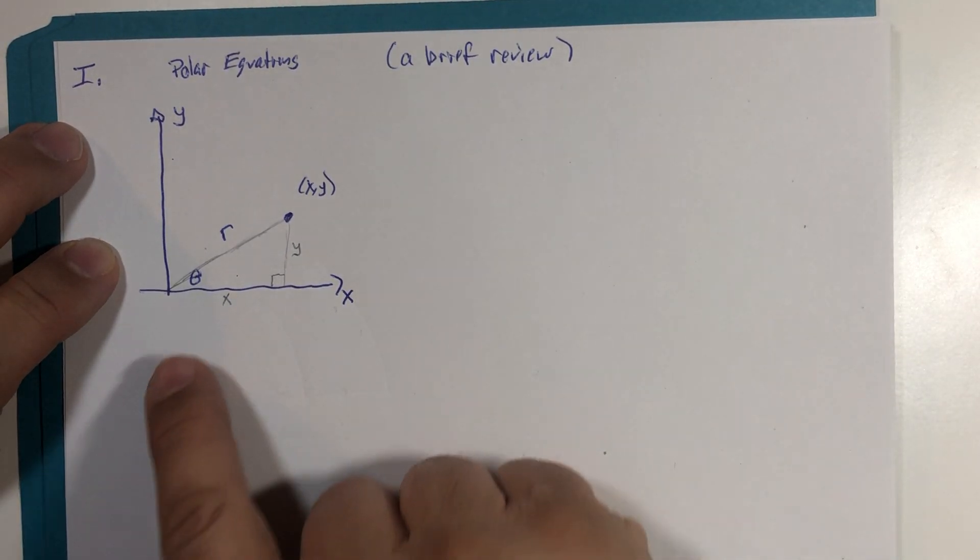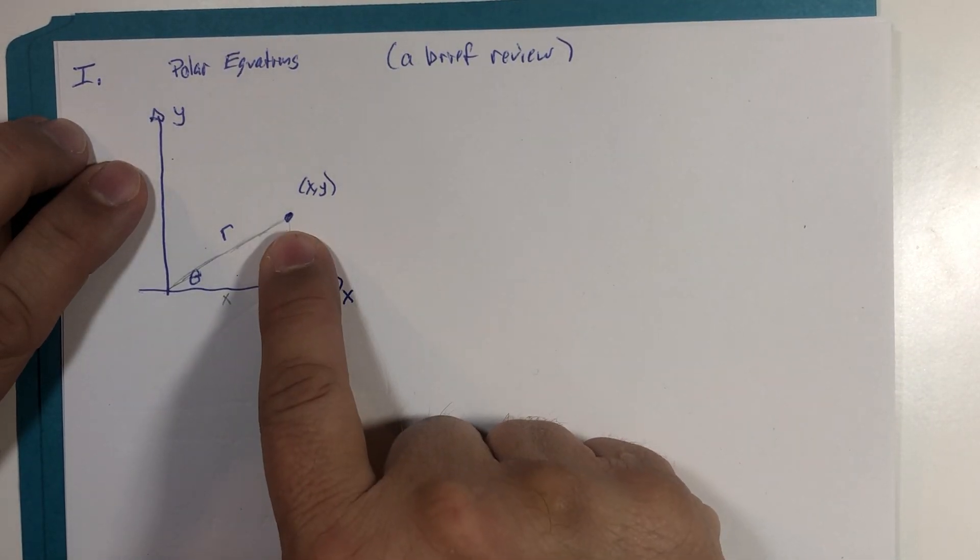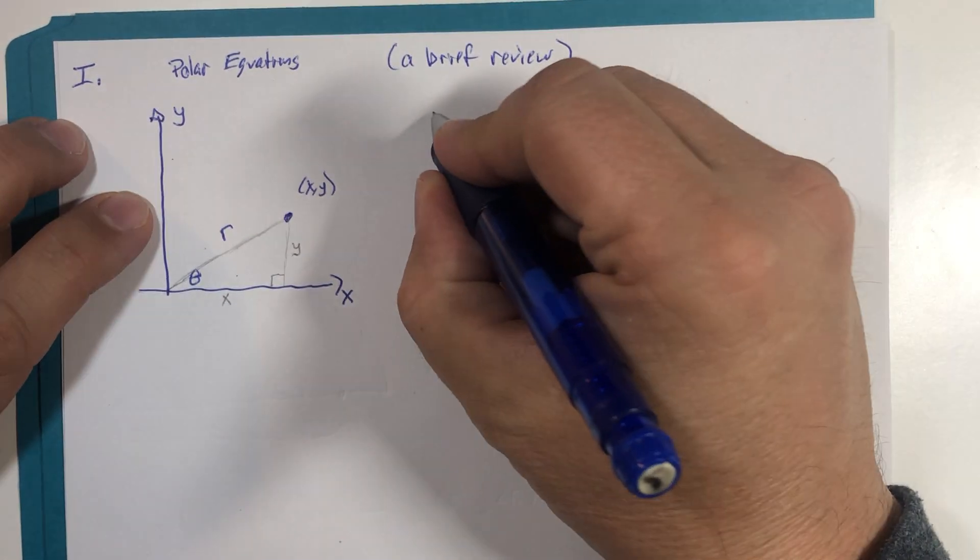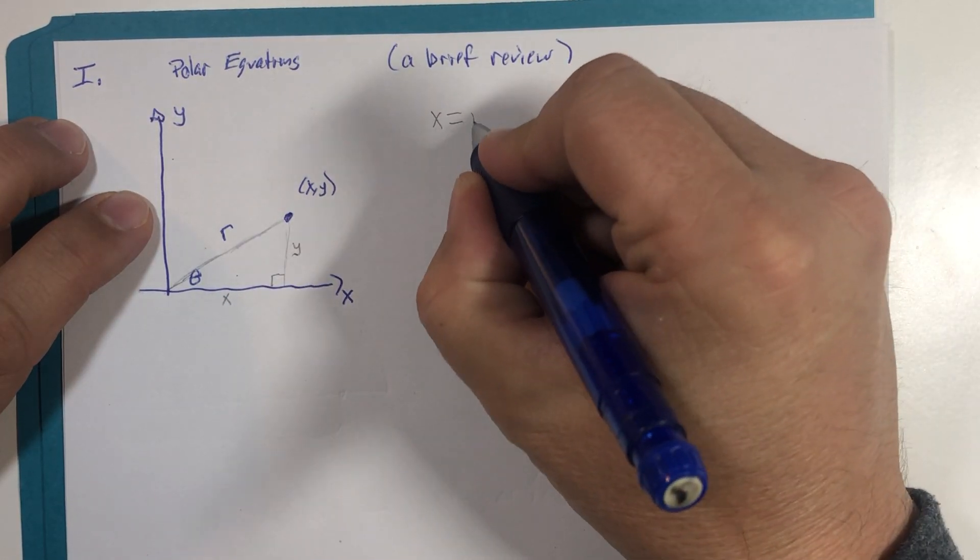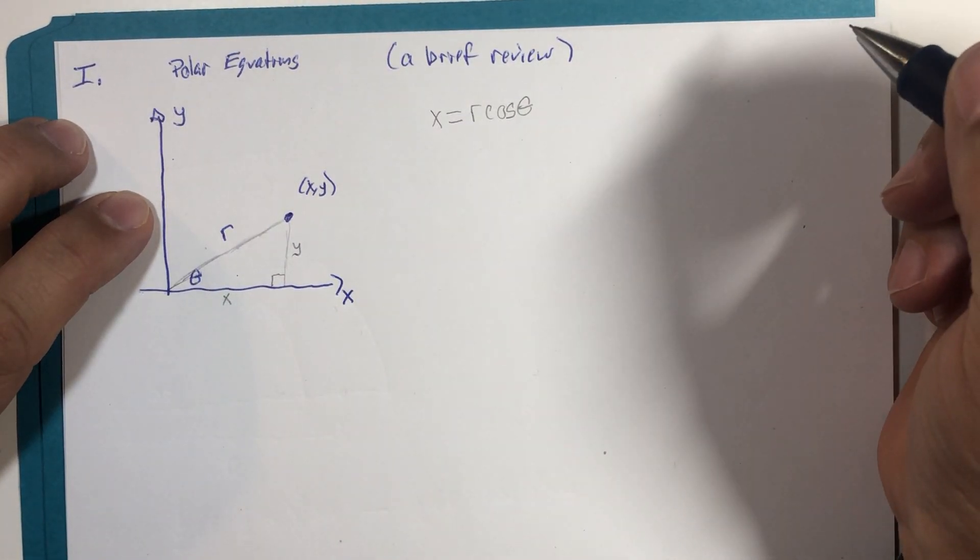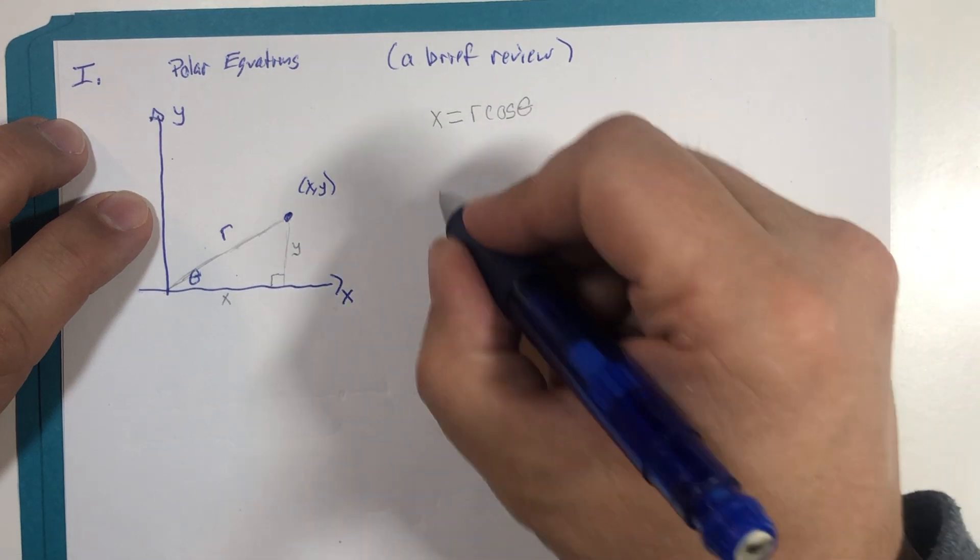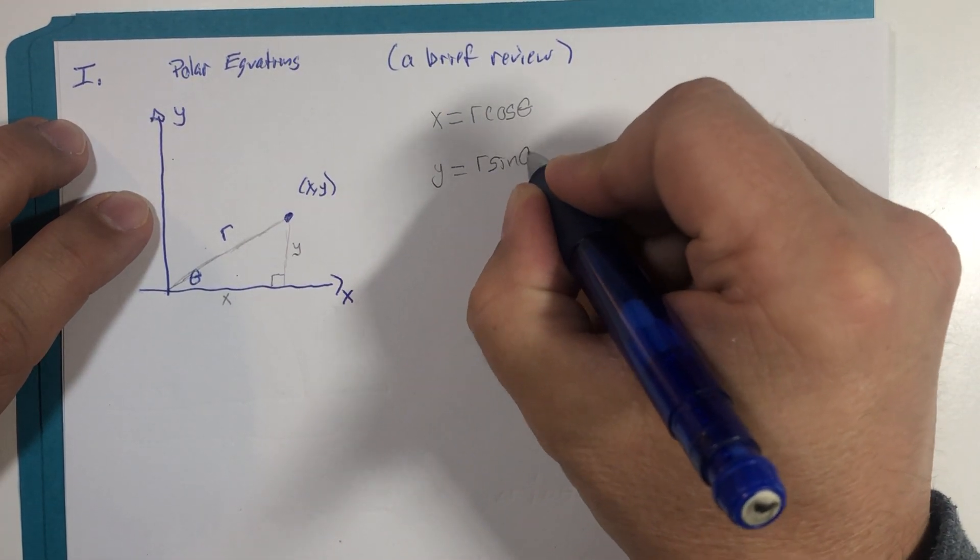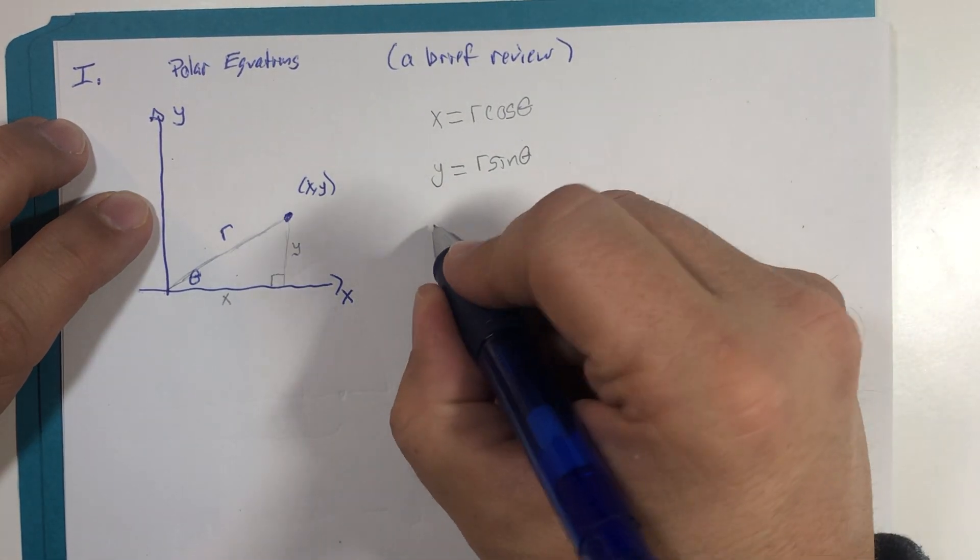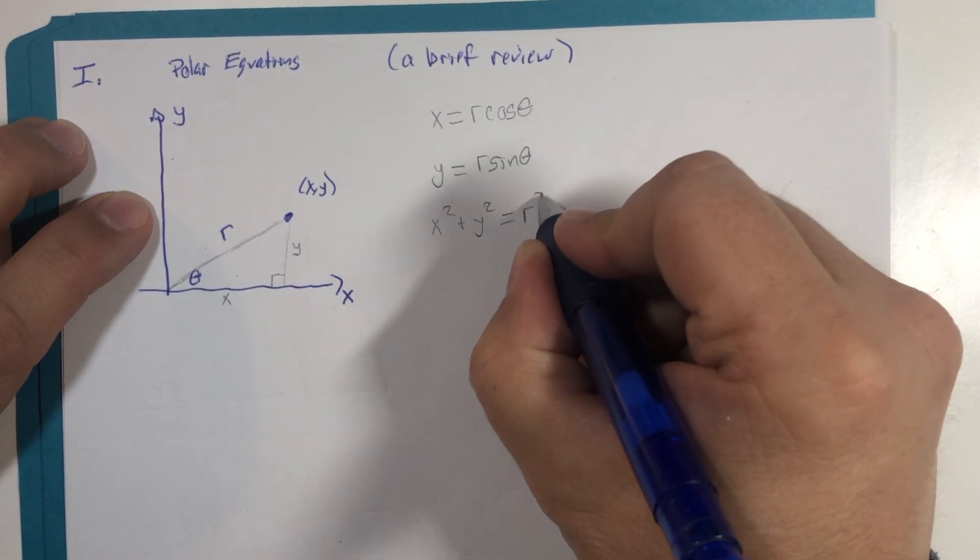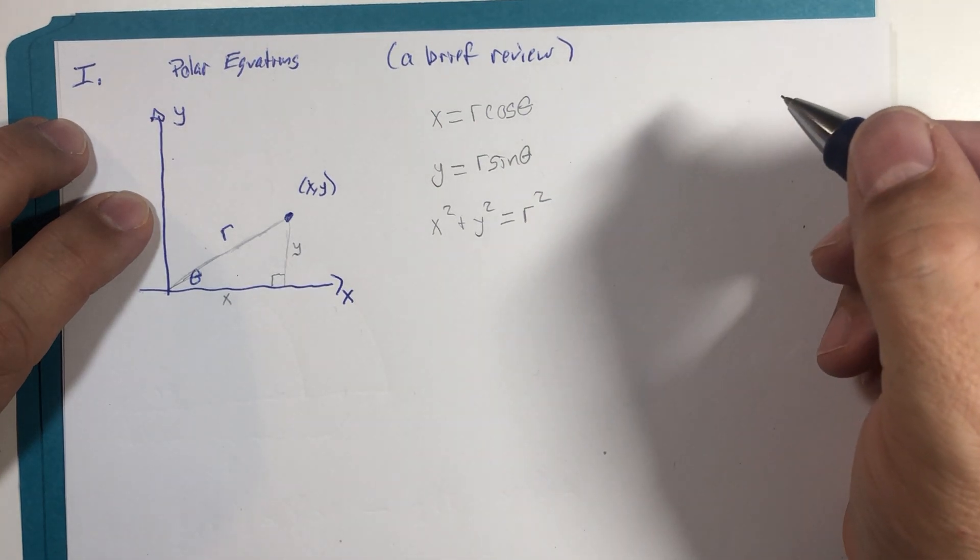If we have a point in the xy-plane, we have some basic conversions that we have used many times before. x is r multiplied by the cosine of the angle, and y is r multiplied by the sine of the angle. And of course, we know that x squared plus y squared equals r squared by the Pythagorean theorem.